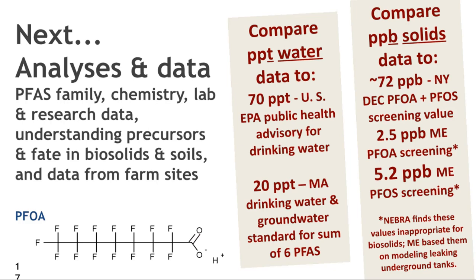We're going to shift now and look at some analyses and data. When looking at water data in parts per trillion, the 70 parts per trillion U.S. EPA Public Health Advisory for drinking water is a good benchmark. The lower numbers adopted by some states — for example, 20 parts per trillion for six PFAS chemicals for both drinking water and groundwater — are another reference. When looking at solids, such as PFAS in biosolids or soils, we can compare to Maine's numbers: 2.5 parts per billion for PFOA and 5.2 parts per billion for PFOS, though we challenge those numbers as being appropriate.